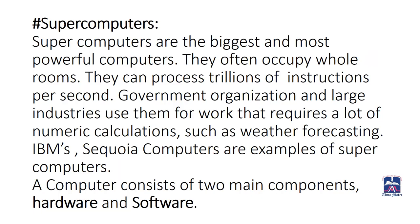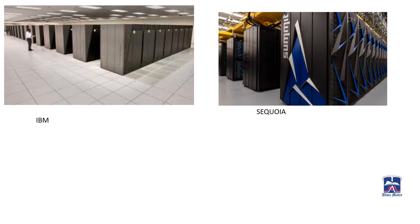Super computers are the biggest and most powerful computers. They often occupy a whole room and can process trillions of instructions per second. Government organizations and large industries use them for work requiring a lot of numeric calculations, such as weather forecasting. Examples are IBM and CQ computers. As you can see in the image, they have occupied a whole place — super computers need a lot of area to install them.